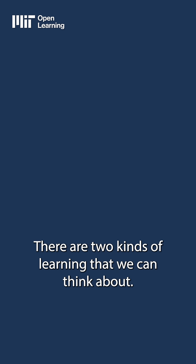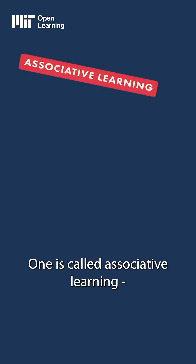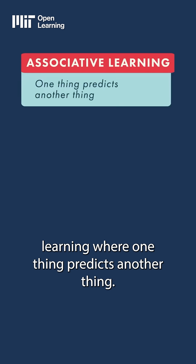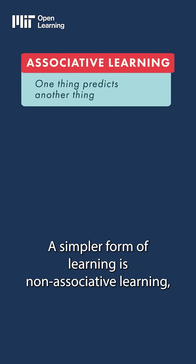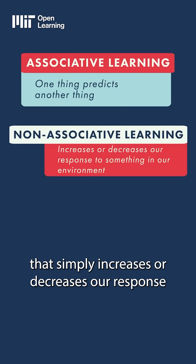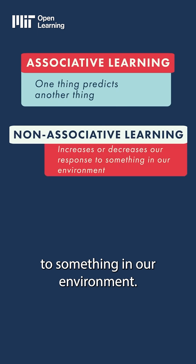There are two kinds of learning that we think about. One is called associative learning — learning where one thing predicts another thing. A simpler form of learning is non-associative learning, which simply increases or decreases our response to something in our environment.